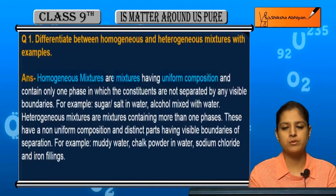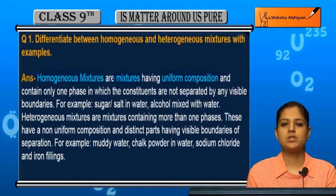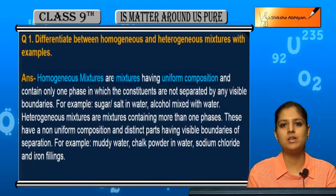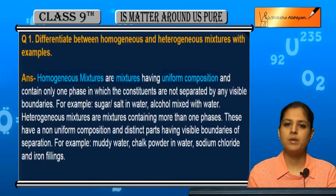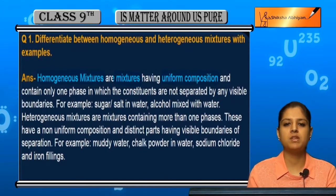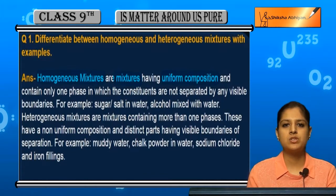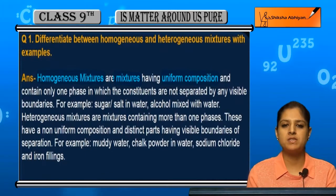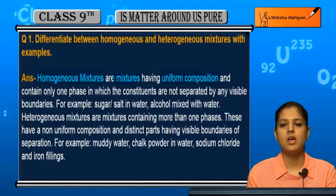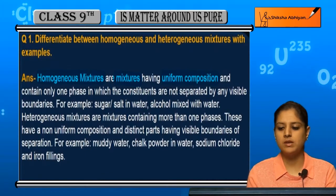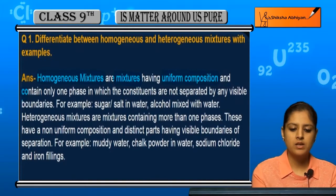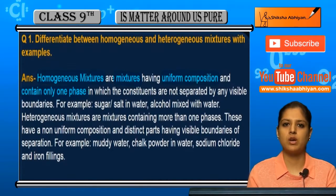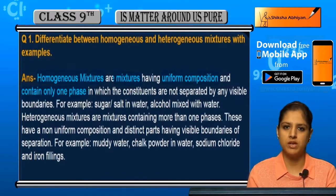Homogeneous mixtures are those which have uniform composition — they are evenly distributed in every portion of the mixture. No matter where you check, the proportion of constituents is the same everywhere. They contain only one phase.